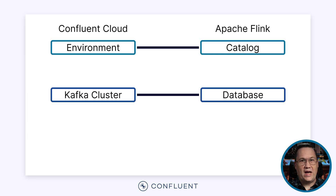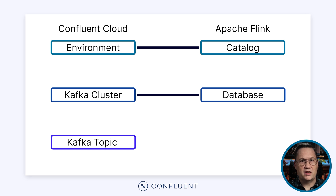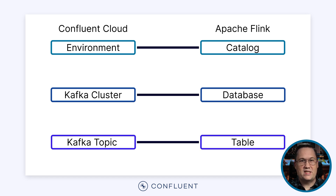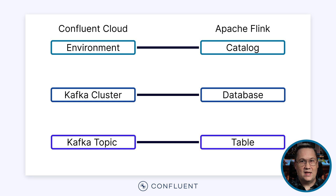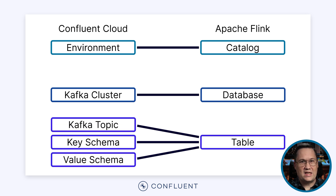Dropping down one more layer, each Kafka cluster can contain one or more topics. The topic contains all of the events or records we want to query. Logically, these topics map to a table in Flink. Looking at the example, the orders topic is part of the Marketplace cluster which lives in the e-commerce environment. However, it's not quite that simple. A table in Flink defines where the data lives and what shape it will take. This requires a schema, but Kafka topics don't have schemas built in. To obtain the schema, we must look for the corresponding entries in the schema registry. This means that in Flink, a table maps to the Kafka topic, but also the key schema and the value schema. And once again, this is all automatic.